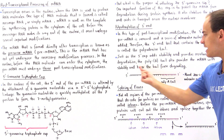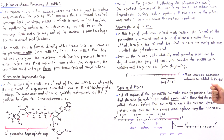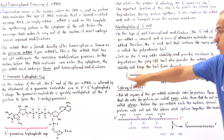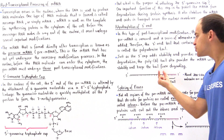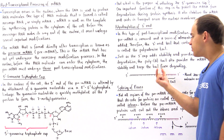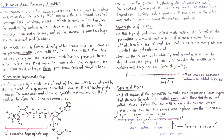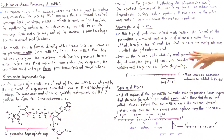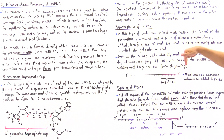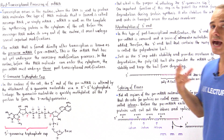If this is our pre-mRNA molecule with the 5' end and the 3' end, a small section of the 3' end is cleaved and removed, then we add a bunch of adenosine phosphates — anywhere from 200 to 250 adenosine nucleotides — to our 3' end. That's exactly why it's known as the poly-A or poly-adenosine tail.